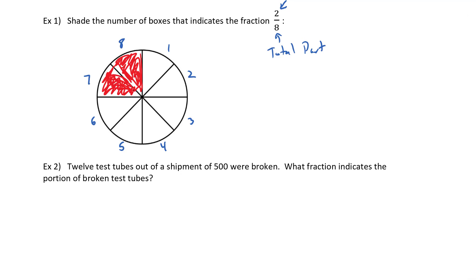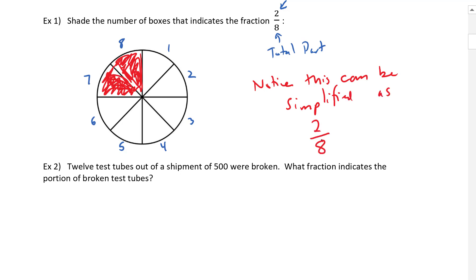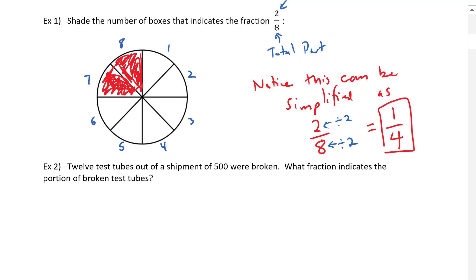Notice that we can simplify this, and this should be done when possible. We look at two over eight and find a common number between the top and the bottom — in this case, two. So I divide the top by two and the bottom by two. One of the great things about fractions is that we can do whatever we want to the top as long as we do the same thing to the bottom in terms of multiplication or division. That rule does not apply with addition and subtraction. Two divided by two is one, and eight divided by two gives four, so we get one quarter.